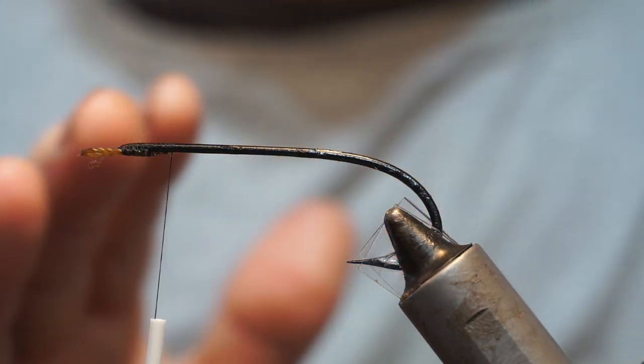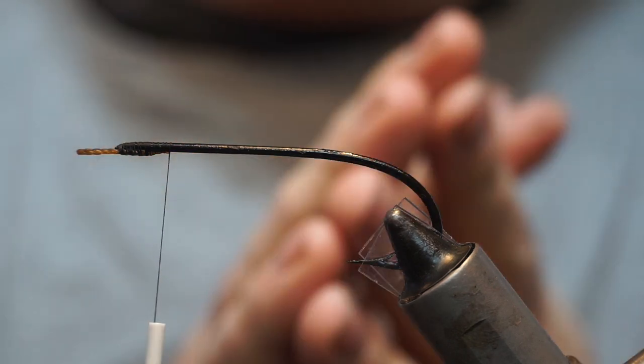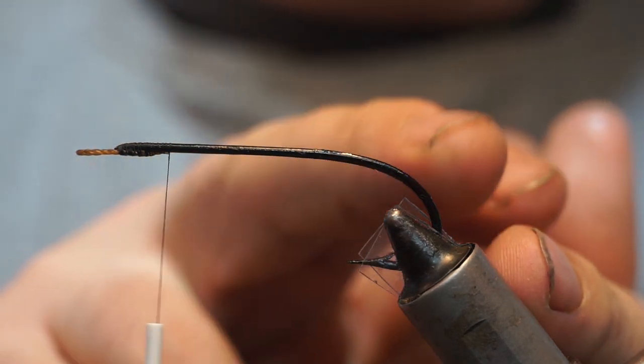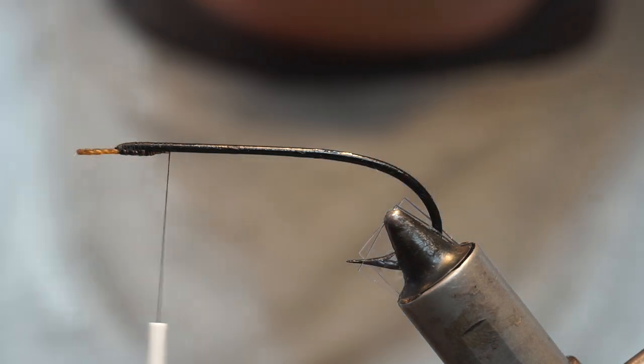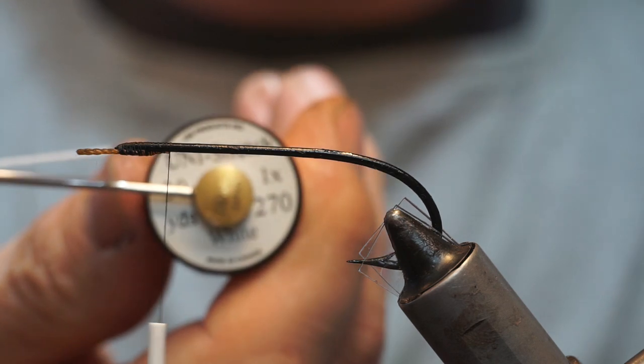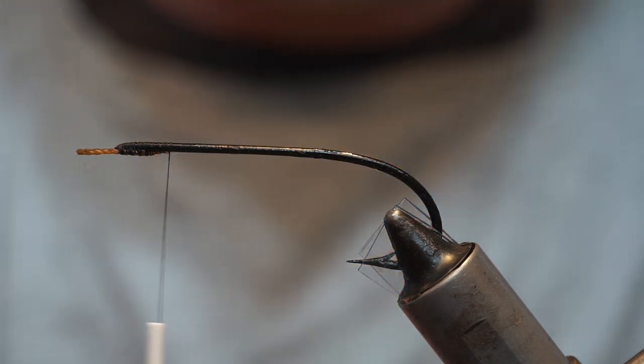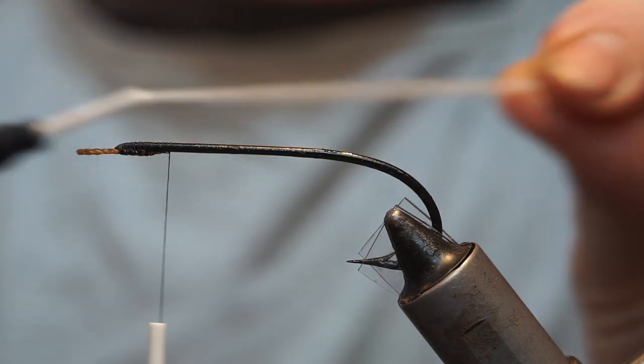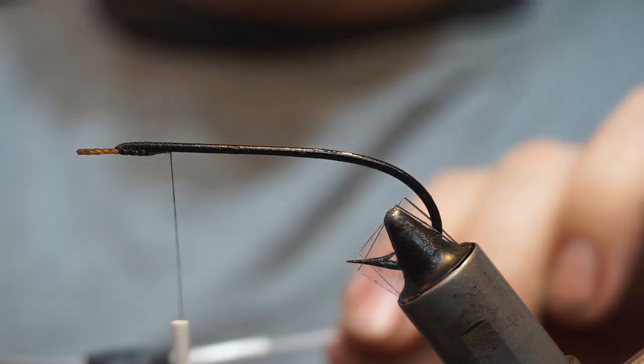Okay, so I've had a request to show you how to create a taper whenever tying a classic salmon fly that goes right through the body and down to the tip. So I'm going to use for that this uni stretch, which is like an elastic floss type stuff.